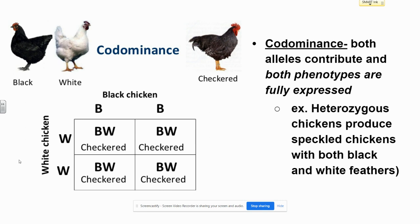Next up, co-dominance. Think of co-captains or cooperation. Notice again, unlike Mendelian complete dominance, we have two different capital letters representing a single trait. In this case, we're talking about feather color. When we have homozygous genotypes, they lead to either a completely pure black feathered or a completely pure white feathered chicken. But when we have the heterozygous genotype, a capital B and a capital W, we get a speckled chicken, which is called an erminite chicken. These chickens have both types of feathers — some are completely black and some are completely white, and it looks kind of checkered or speckled.